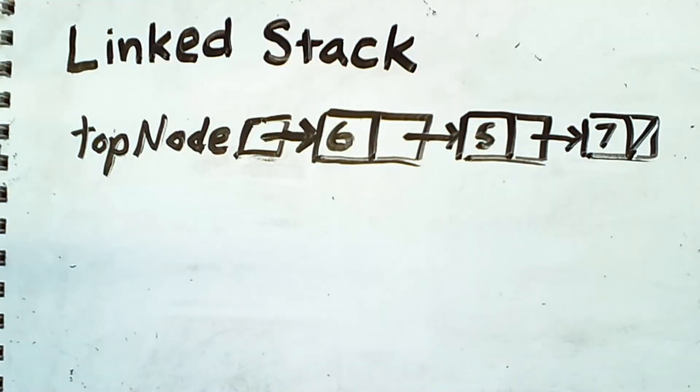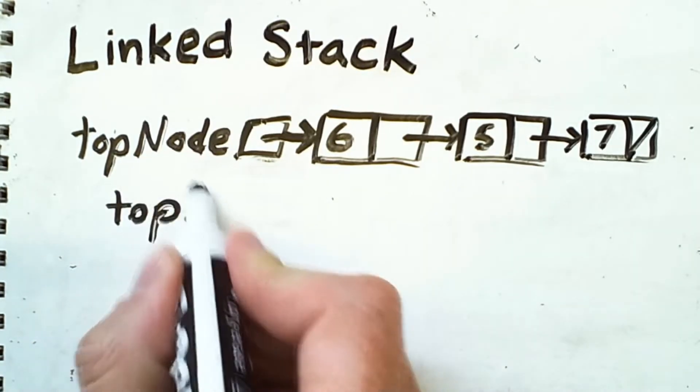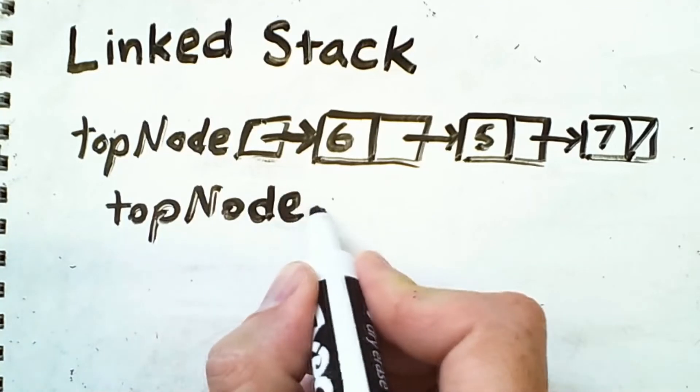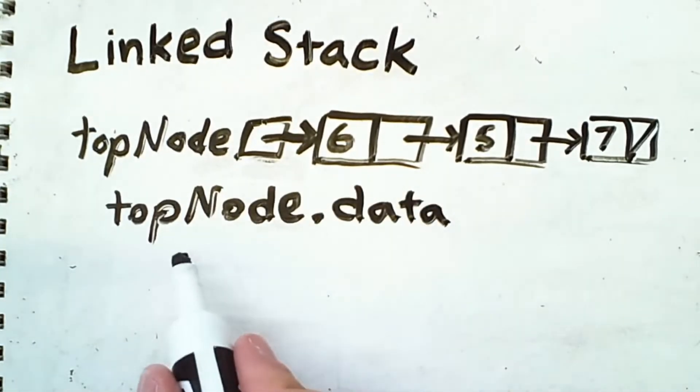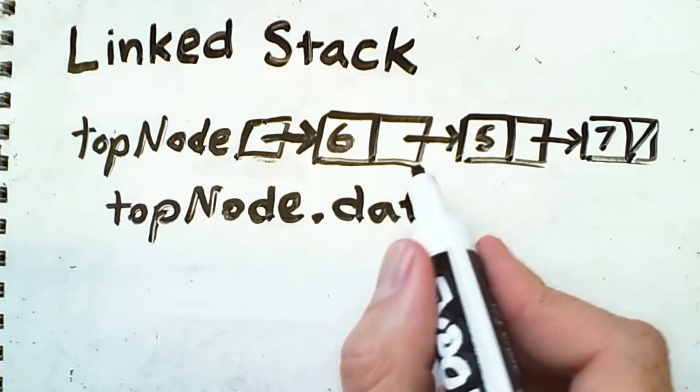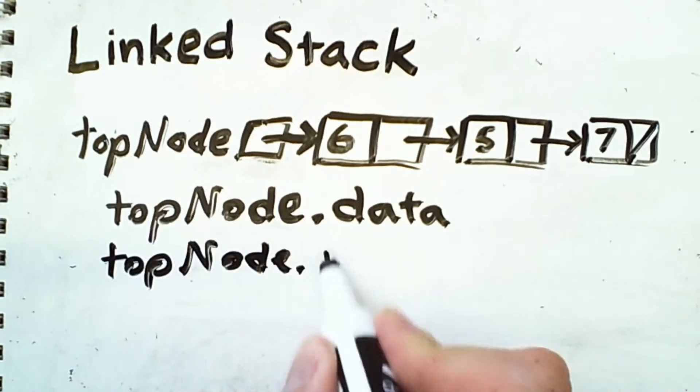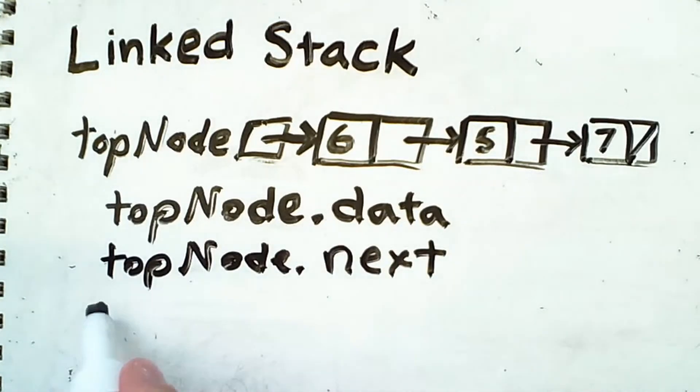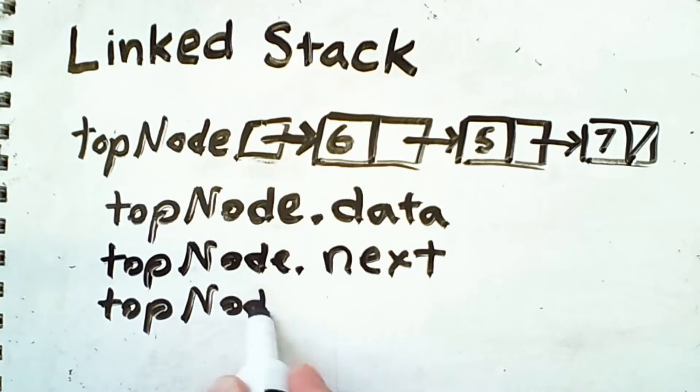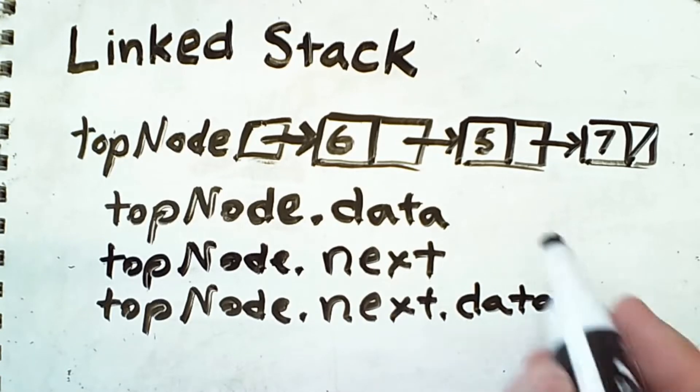Now the details of how we access data are slightly different in different languages. But in Java, the way we would access that 6 would be through the top node like so. We would say top node dot data. So if I had this line in my code, I would be returning a value of 6. And if I wanted to access that next link, I would say top node dot next. And to further drive this point forward, if I say top node dot next dot data, that would be the 5.